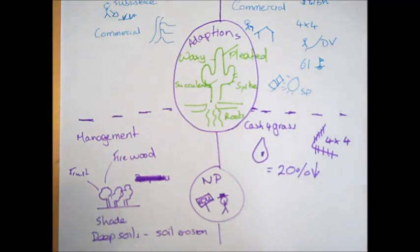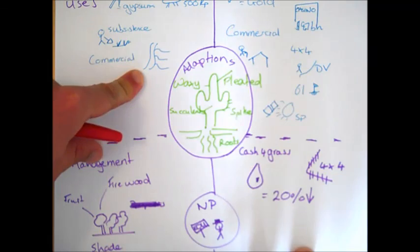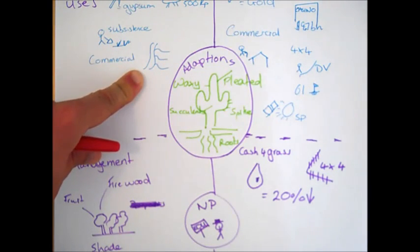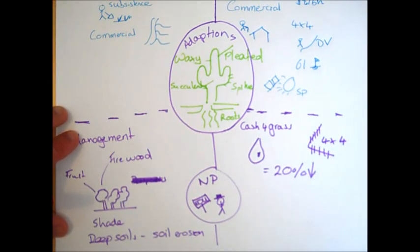And we've also seen earlier on how the creation of a canal through the Thar desert has allowed for irrigation and therefore commercial farming. However, there is a slight problem. The irrigation at times hasn't been done particularly well. And as a result of that, we've seen large amounts of water sitting on the surface and then this has evaporated and left the salt behind and has actually resulted in increased desertification in the Thar desert.